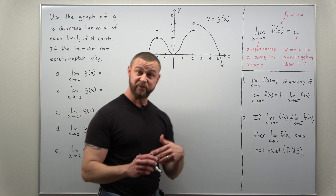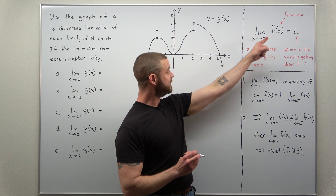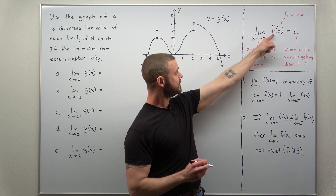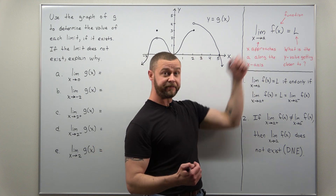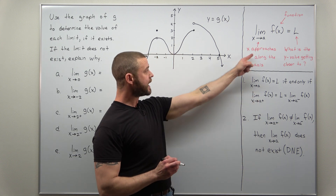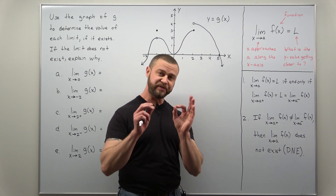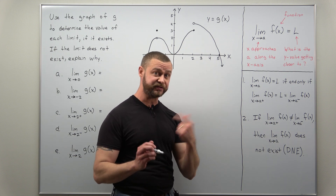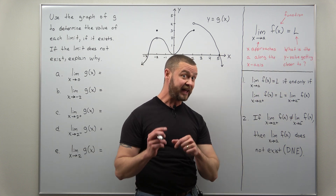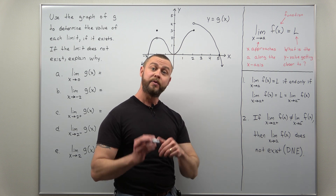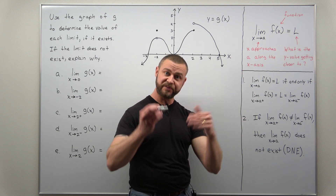Let's get an idea of what a limit is in case that's still not clear. When we write the limit as X approaches a of f(x) equals L, we're thinking about what happens to the function f(x) as X approaches a — some number — from both sides. As X gets closer to a along the X-axis, what happens to the Y or function values? If the Y values approach a single number L from both sides, we call it the limit and say the limit exists.